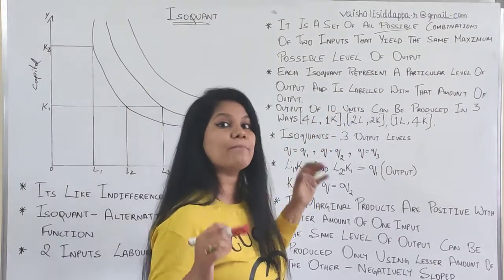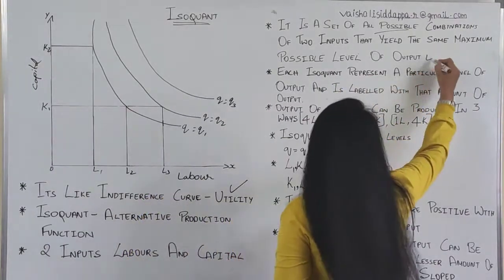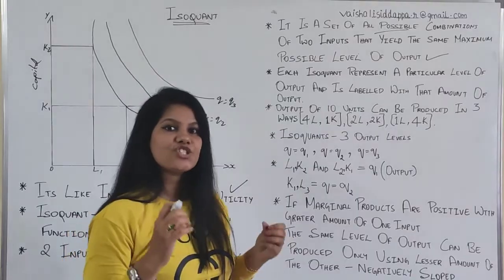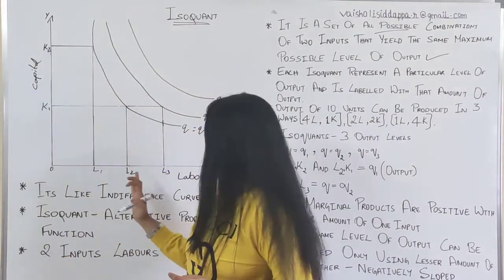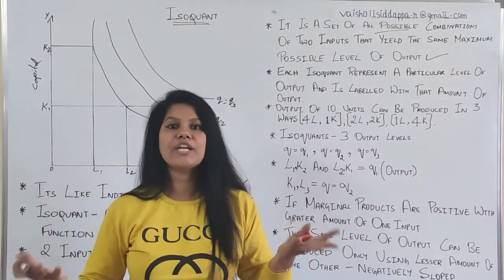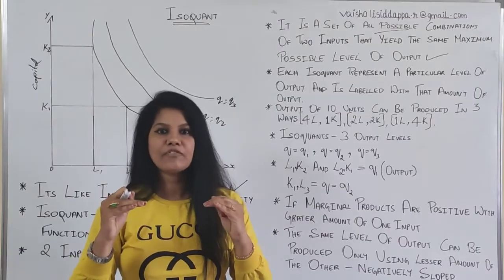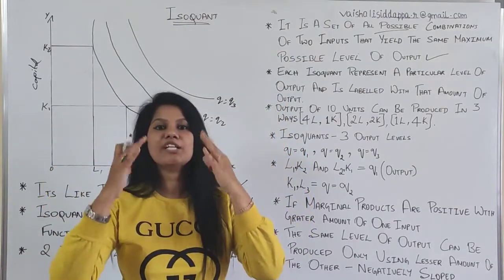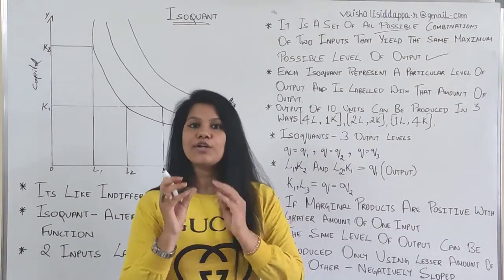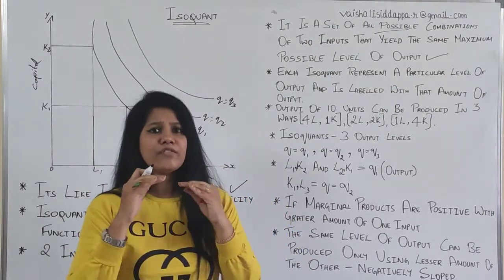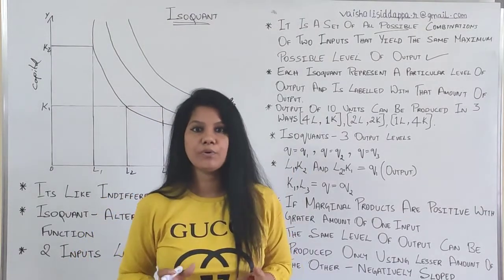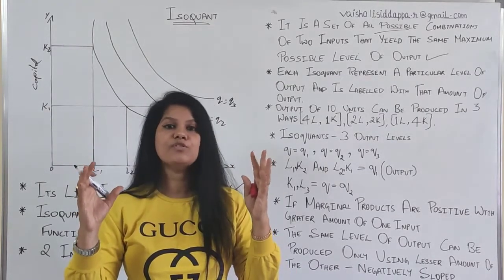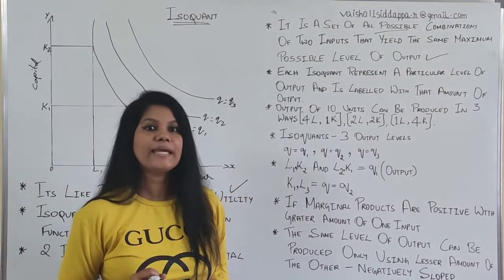The maximum possible output you will try to get. Each isoquant represents a particular level of output. Each time when you are going to use any combination of capital and labor, the production is going to vary. If you are using less of labor and less of capital, definitely the output will be less. If you are using more capital and more labor, output is going to increase.